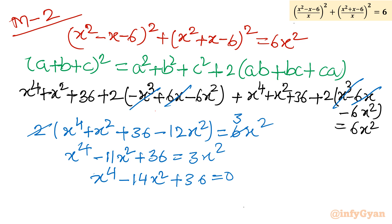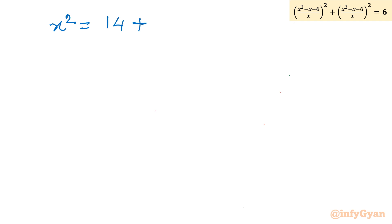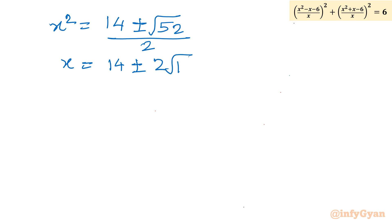Now let us apply the quadratic formula, because this is a quadratic equation in x². So x² = [14 ± √(196 - 4·36)] / 2 = [14 ± √(196 - 144)] / 2 = [14 ± √52] / 2. Since 52 = 4·13, we get x² = [14 ± 2√13] / 2 = 7 ± √13.